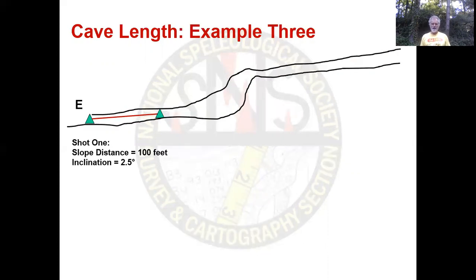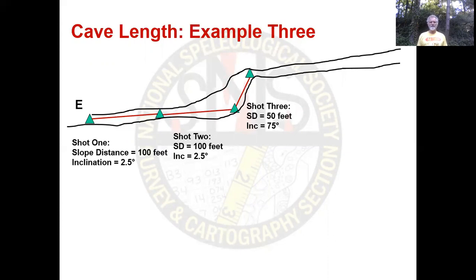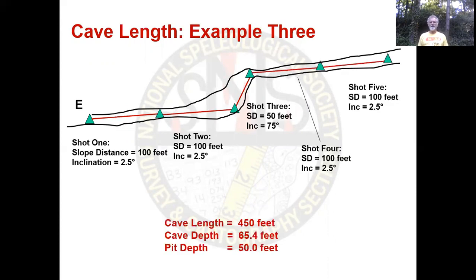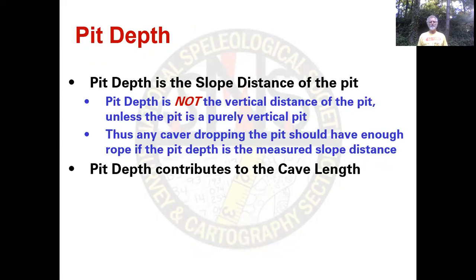Sample three. Shot one, shot two. Shot three is now at an angle. Shot four, shot five. Again, four shots at a slope distance of 100 feet and one shot at a slope distance of 50 feet, equaling a cave length of 450 feet. The cave depth this time is 65.4 feet, and the pit depth is still 50 feet — it's a slope distance. To repeat: the pit depth is the slope distance of the pit. It is not the vertical distance of the pit unless the pit is purely vertical, in which case the slope distance and the vertical distance will both be equal.